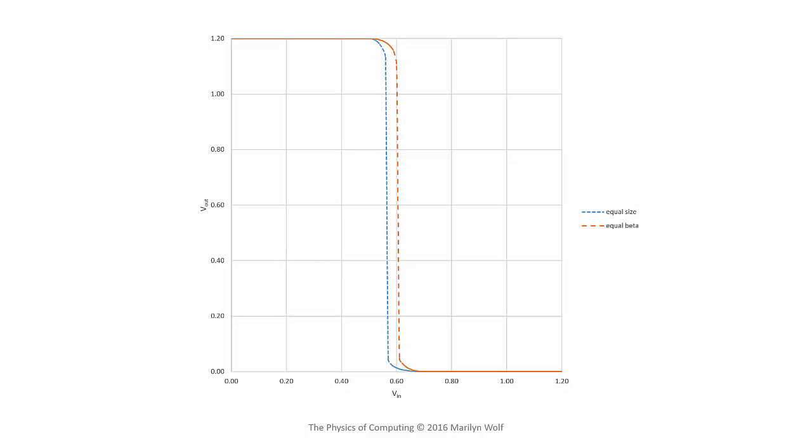Here's an actual transfer curve for real inverters. Note that these transfer curves are steeper than the ones we just saw. That's a good thing. We want to have a steep transfer curve to get a solid transition between 0 and 1.